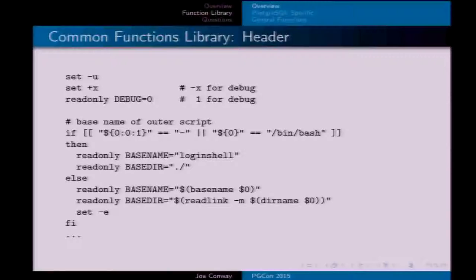You often need to have the base name and base directory of the program that's running, but when you're testing or developing it's convenient to source the common library into your open shell. Depending on the shell, you might get strange-looking values for base name and base directory when doing that. `basename` with `$0` gives the name of the executing program, and `readlink -M` gives the canonical path, so if someone calls it as `./whatever` you actually get the full expanded directory name.